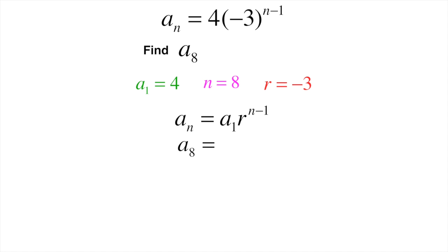We know it's going to be a_8 is what we're going to be looking for. So then a_1 is four. The ratio is negative three. We find that over here. And then we have our exponent n is eight. So there's just going to be an eight minus one.